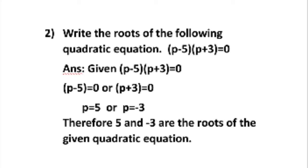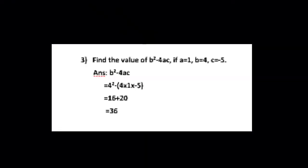Question number 3: find the value of B square minus 4AC if A is equal to 1, B is equal to 4 and C is equal to minus 5. Substituting: 4 square minus 4 multiplied by 1 multiplied by minus 5. That is 16 minus 4 times 1 times minus 5. 4 multiplied by 1 multiplied by minus 5 gives minus 20. So it becomes 16 minus minus 20, which equals 16 plus 20. Therefore, B square minus 4AC is equal to 36.